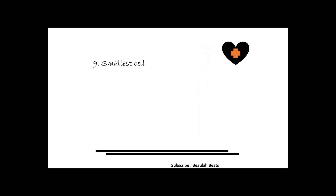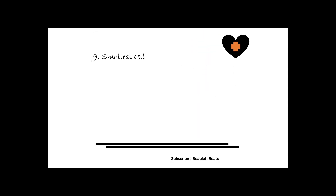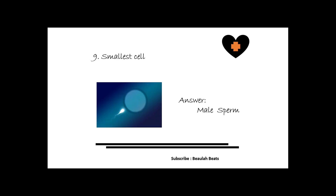The ninth question is: what is the smallest cell in the human body? The answer is the male sperm, also called a gamete. There are two types of gametes — the female gamete and the male gamete.